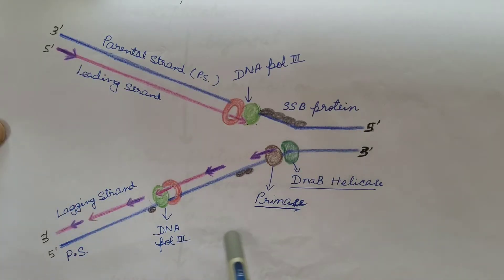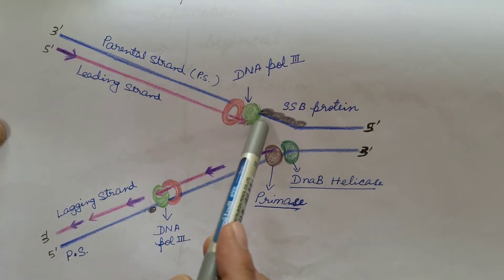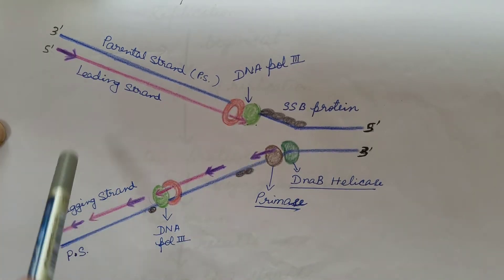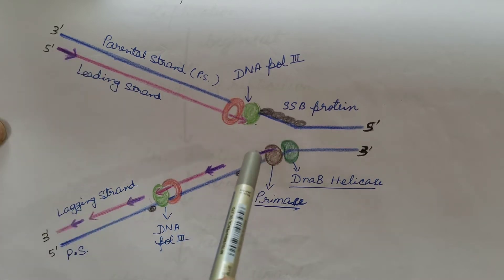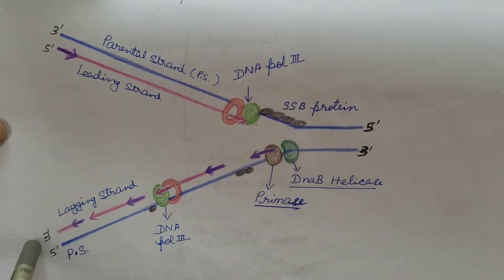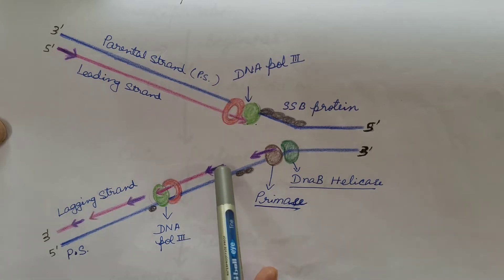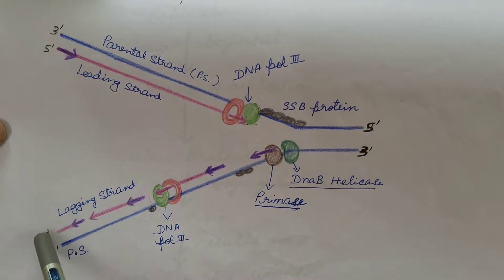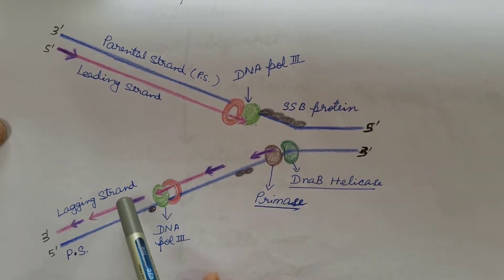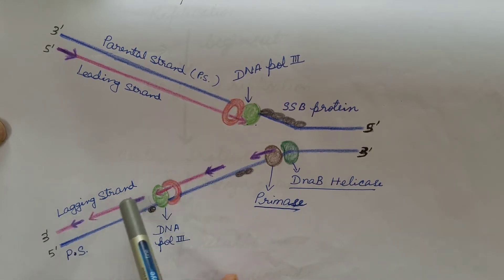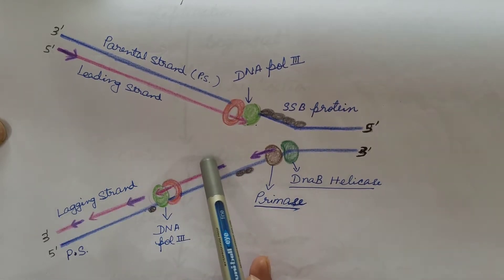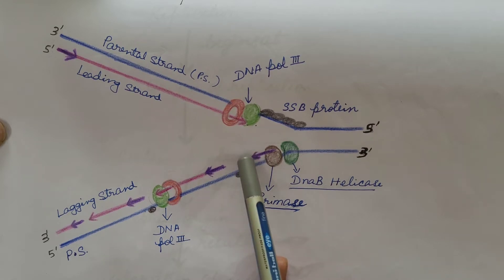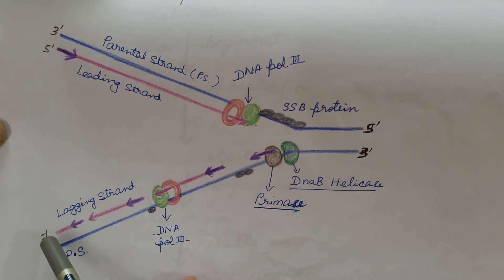Let us understand this with the help of a diagram. This is the leading strand and this is the lagging strand. DNA polymerase 1 removes the primer from both the leading strand and the lagging strand by its 5'→3' exonuclease activity. The lagging strand is in the form of Okazaki fragments. When the primer is removed, there is a gap between the Okazaki fragments, and DNA polymerase 1 also helps in filling these gaps.